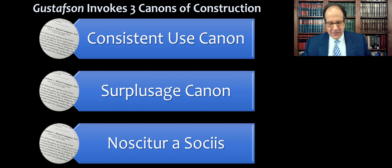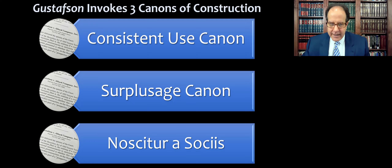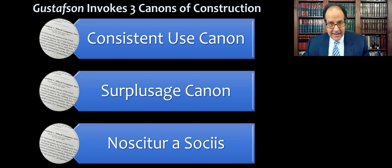I'm a little skeptical about this one sometimes, because I could easily see myself writing a document where I talk about how much I love my family, my dog, teaching, and guacamole — and I can assure you I am using the word 'love' inconsistently. Sometimes when the consistent use canon is applied in an absolute way, they'd say this word has the exact same sense every time it occurs in the same statute.